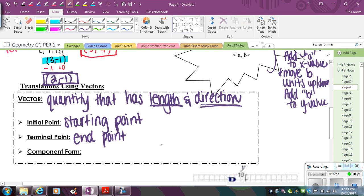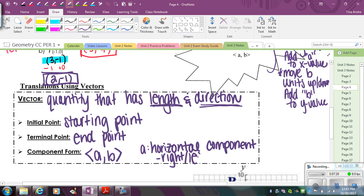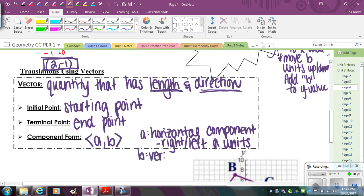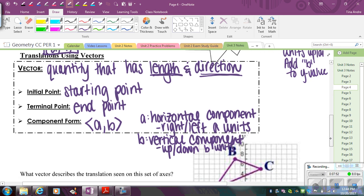So on a graph, we can't count diagonally, so what we use is the horizontal and vertical component. So when we talk about a vector, we're talking about it in component form, which looks like this, and it has those sideways V-shaped brackets. You can remember that for vector. And A is the horizontal component, which basically tells you your right or left movement. So this would be right or left A units, or add that value to the X. And then B is the vertical component. So that's going to tell you up or down B units, or adding that B value to your Y coordinate.